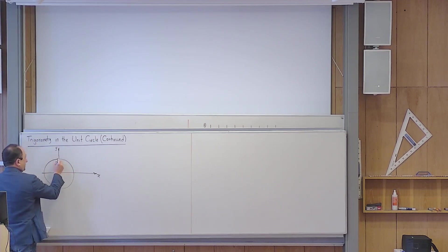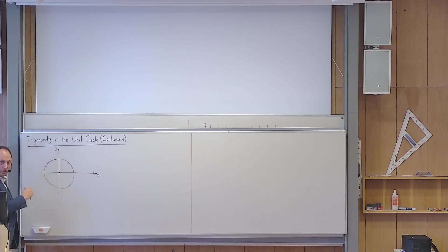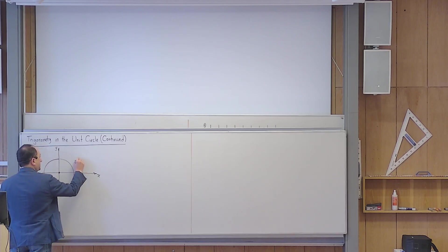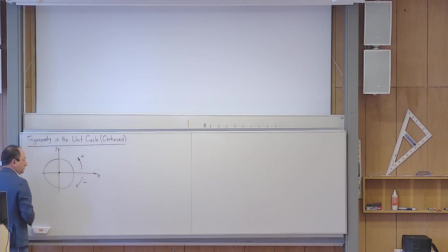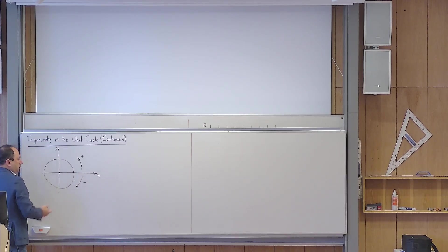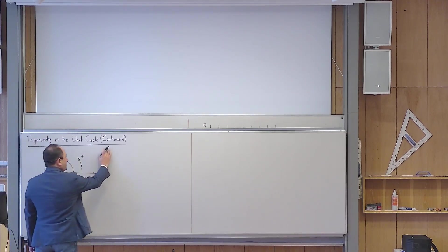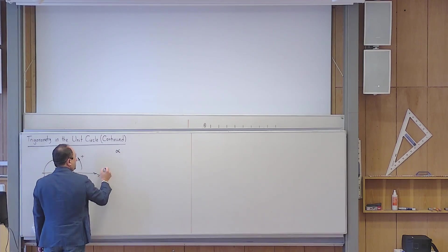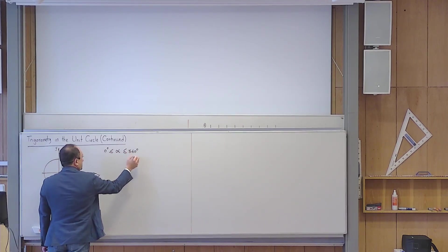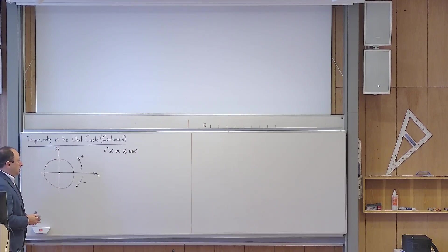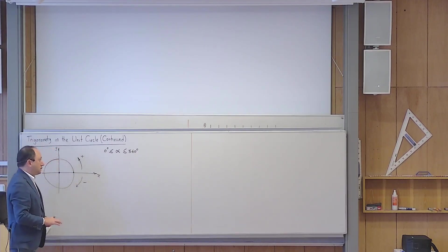For trigonometry, we also associate a positive direction and a negative direction for our circle. By convention, the counter-clockwise direction was positive, and the clockwise direction was considered to be negative. We also had associated a point on the circle as the origin of the circle. Whenever we have an angle, in geometry, an angle alpha is at least zero degrees and at most 360 degrees.